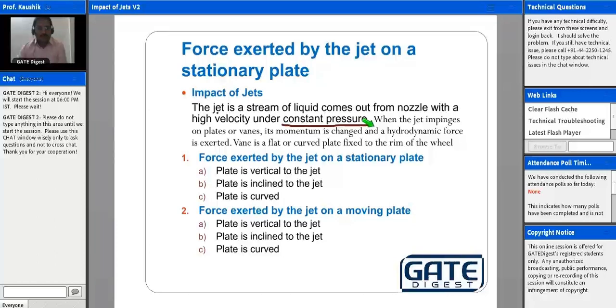So when the jet impinges on the plates or vanes, its momentum is changed and a hydrodynamic force is exerted. Now when it comes to this momentum, momentum is nothing but mass into change in velocity. Mass into change in velocity, we call it as momentum variation.